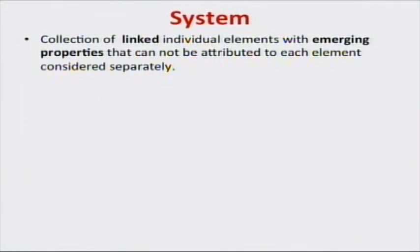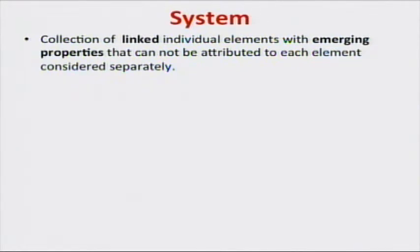From this idea, the concept of a system arose. A system is a collection of elements that are linked — functionally, anatomically, by proximity, whatever. The important concept of a system is that the collection of elements as a whole has what is called an emergent property, which cannot be explained by any of the elements of the system alone.